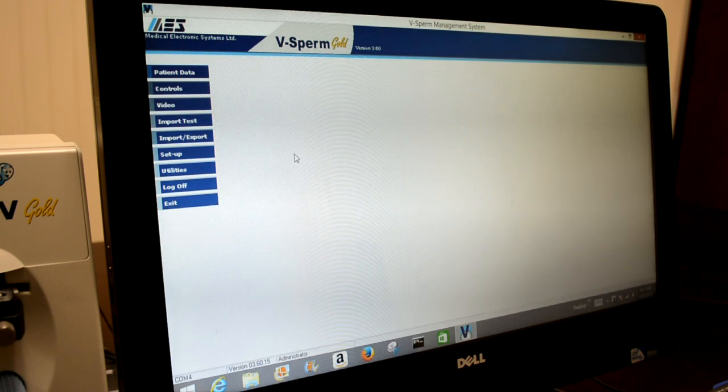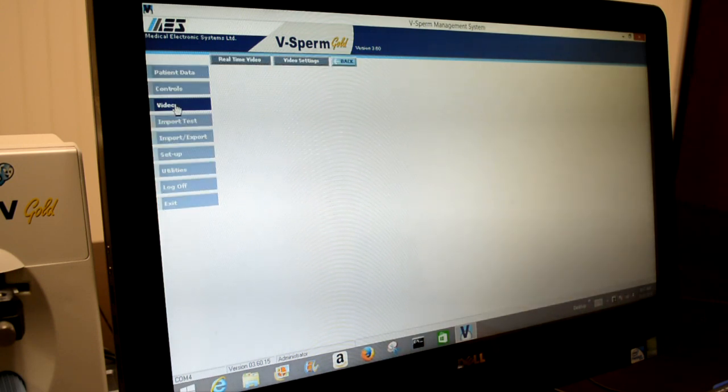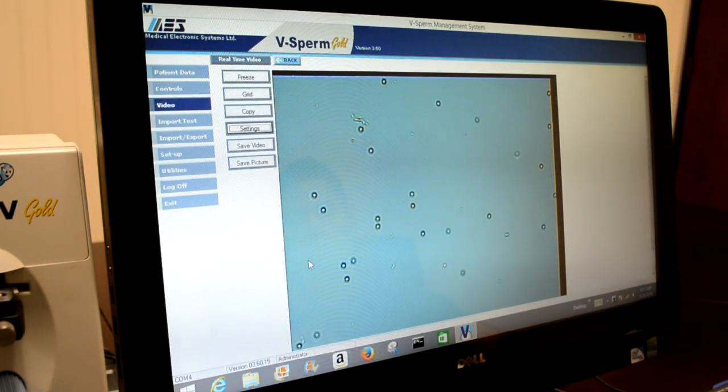If you want to count your sample using the visualization system, an easy way to do so is by opening the video tab in vSperm. This will give you a nice large field of view. We'll click on real-time video, and the image will be displayed.